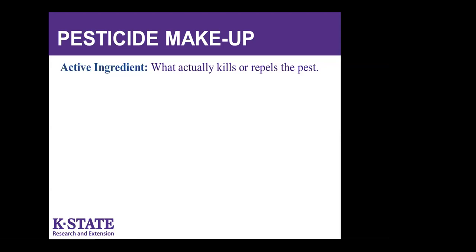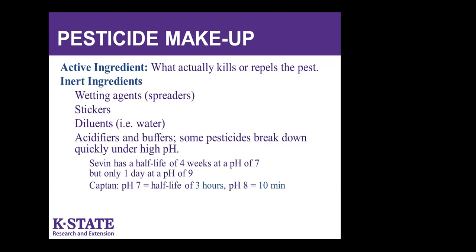Pesticide makeup: the active ingredient is what actually kills or repels the pest. But in that container there are all kinds of inert ingredients — these have also gone through testing so EPA is confident there won't be a problem with them. Many are wetting agents or soaps that help the product spread out on the leaf surface and stick to the target. Others can be water, silica particles, acidifiers and buffers — without these, some products would break down too quickly and not be effective against the pest.